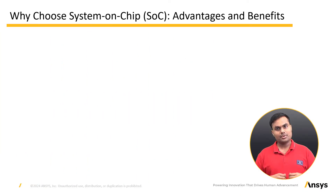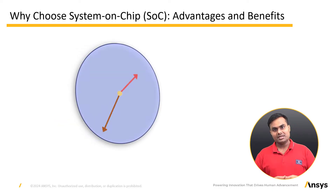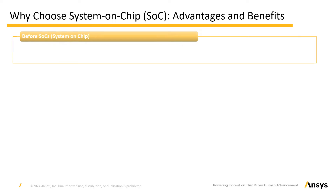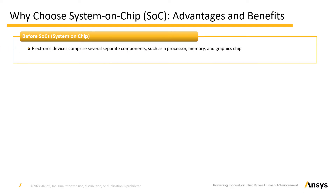Why choose System-on-Chip? Advantages and Benefits. We will journey back in time before the advent of System-on-Chip technology to understand the transformation it has brought to our electronic devices. In the pre-SOC era, electronic devices consisted of multiple separate components including a processor, memory, graphics chips, and more. However, this approach had a few significant drawbacks: devices were larger and less portable, they were more expensive due to multiple integration of components, and the power efficiency was lacking, leading to shorter battery life.